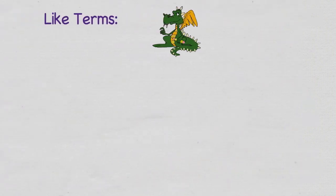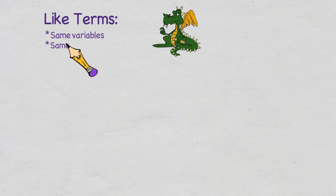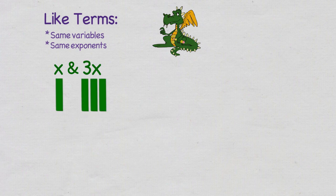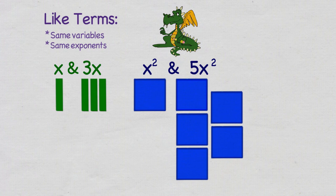And when you have two or more of these terms with the same variables and the same exponents, then they're considered to be like terms. So, x and 3x are like terms. So are x squared and 5x squared. You will notice that in both cases, the variable and the exponent are the same.